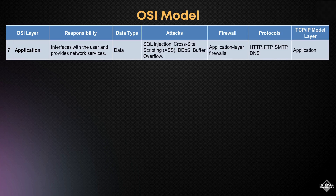However, it's also vulnerable to attacks like SQL injection, cross-site scripting (XSS), distributed denial of service (DDoS), and buffer overflow. To protect this layer, application layer firewalls are commonly used. Key protocols include HTTP, FTP, SMTP, and DNS, which align with the application layer in the TCP/IP model.